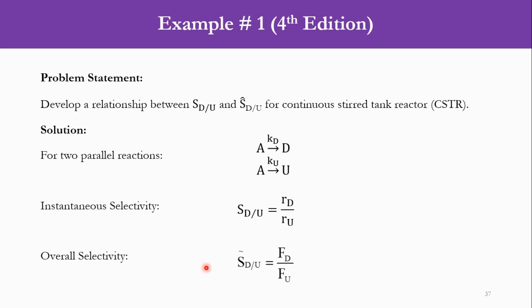So going to the example, develop a relationship between SD/U instantaneous and SD/U overall for a continuous stirred-tank reactor. We have been given two parallel reactions: A goes to D with rate constant kD and A goes to U with rate constant kU. Instantaneous selectivity is defined as SD/U equals rD over rU and overall selectivity SD/U equals FD over FU.